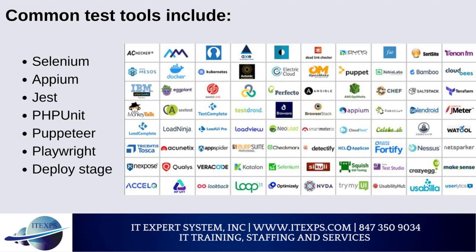The Deploy stage is the final stage of the pipeline. After passing all previous stages, the package is deployed to proper environments — first to a staging environment for further quality assurance, then to a production environment. This stage can support deployment strategies including Blue/Green deployments, Canary deployments, and in-place deployments. It can include infrastructure provisioning, configuration, and containerization using technologies like Terraform, Puppet, Docker, and Kubernetes. Other tools include Ansible, Chef, AWS CodeDeploy, Azure Pipelines Deployment, and AWS Elastic Beanstalk.